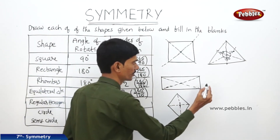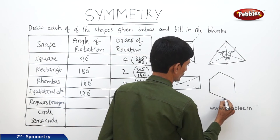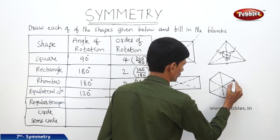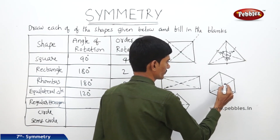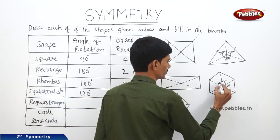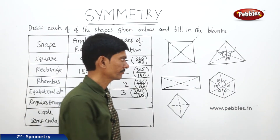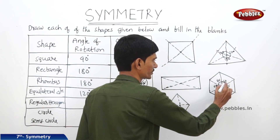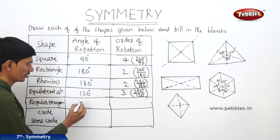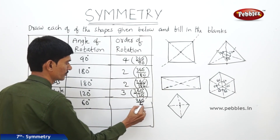In case of a regular hexagon, each section at the center is 60 degrees. If you rotate the regular hexagon through 60 degrees about this fixed point, it will get back its original position. So the angle of rotation is 60 degrees. Then the order of rotation is 360 divided by 60, which is 6.